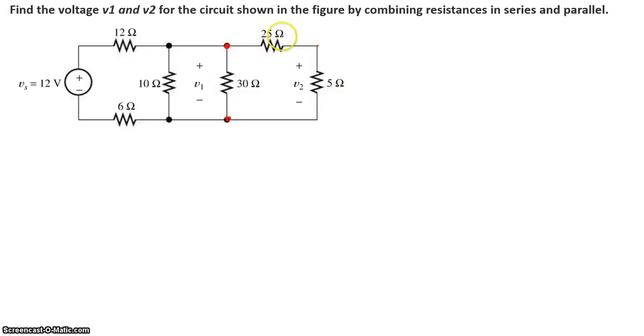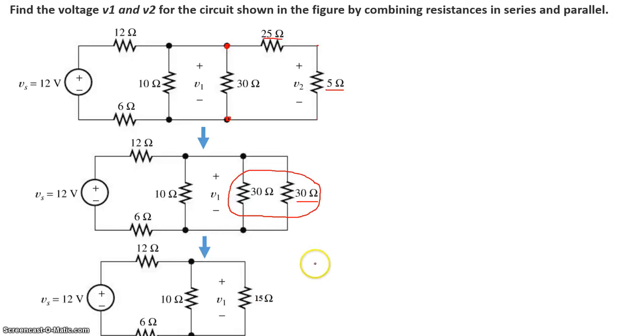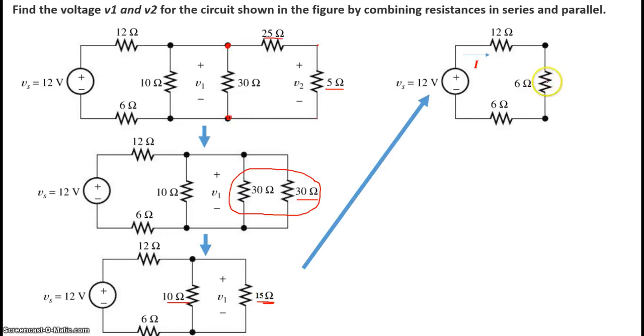So what we notice is that the 25 ohm and the 5 ohm in series will give us 30 ohms together. So we get 30 ohms right here. Now in this circuit, what we see is that 30 ohm and this 30 ohm are actually in parallel. And that gives me 15 ohms in parallel with 10 ohms, which leads me to a total of 6 ohms.